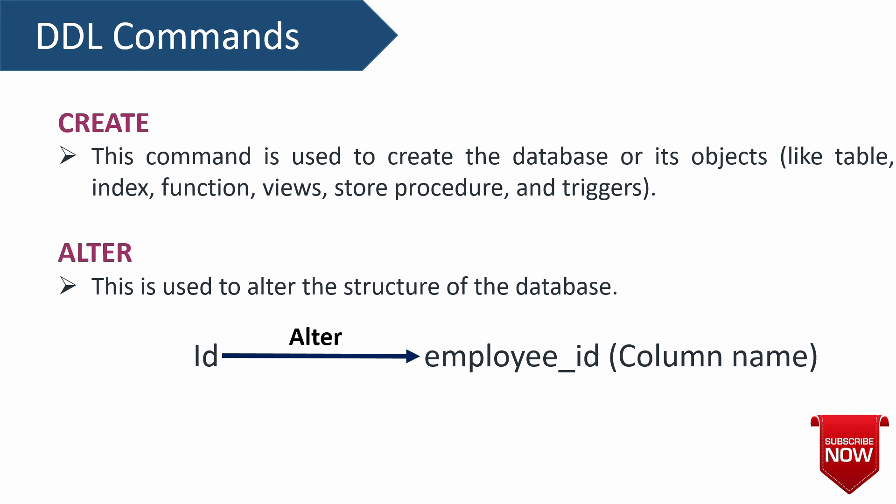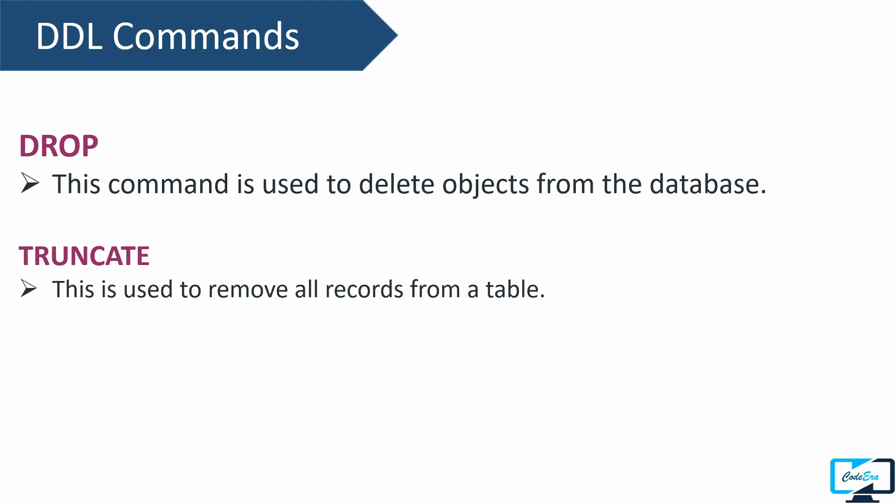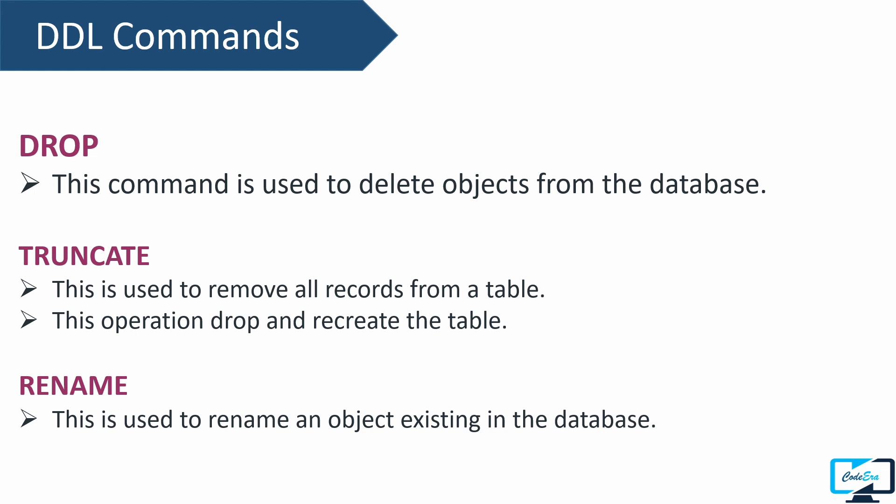The next DDL command is DROP, used to permanently delete an object from the database, such as a table, constraint, or column. DROP not only deletes the data but also deletes the complete structure of that object. The next command is TRUNCATE, used to remove all records from a table in one go — it deletes only the data, not the structure. Truncate works by first dropping the table and then recreating it, which is why it works faster. The last DDL command is RENAME, used to rename existing objects such as a table, column, or the database itself. All these DDL commands deal with database structure, not data.